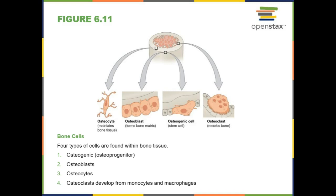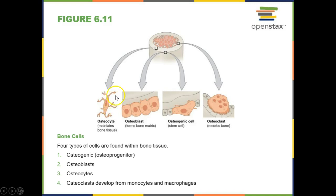Let's look at the actual cells that make up bone. Osteoprogenitor cells are the bone-building stem cells that produce osteoblasts. Osteoblasts are the baby bone cells that produce bony matrix. Once they are surrounded by the bony matrix they become osteocytes. Osteocytes maintain the bony matrix and have long projections that reach out and touch other osteocytes, so they're all in contact with each other within the bone. Osteoclasts break bone down.